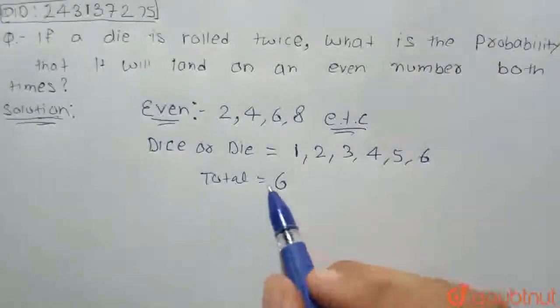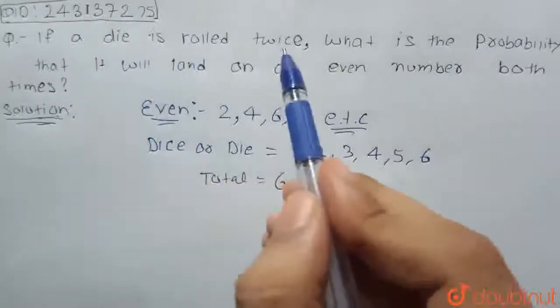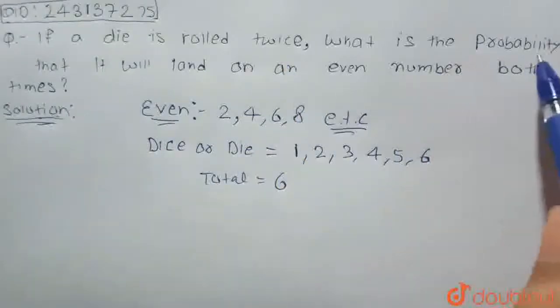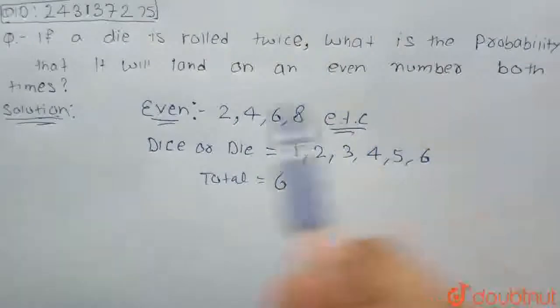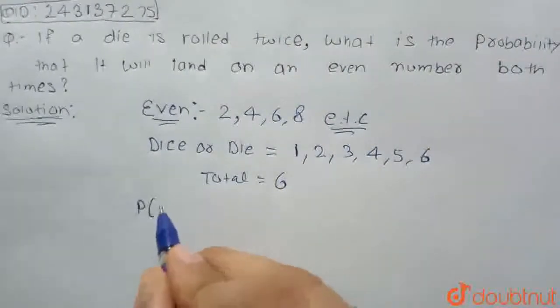As asked in the question, when a die is rolled twice, means a die is rolled two times. So what is the probability that we land on an even number both times? As we know, the probability of an event